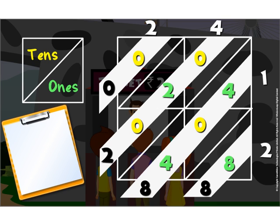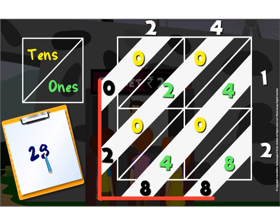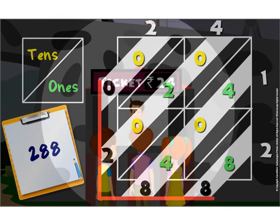We read the numbers across the L formed to get the answer, which in this case is 288. Interesting, isn't it? Same numbers multiplied using two different methods.